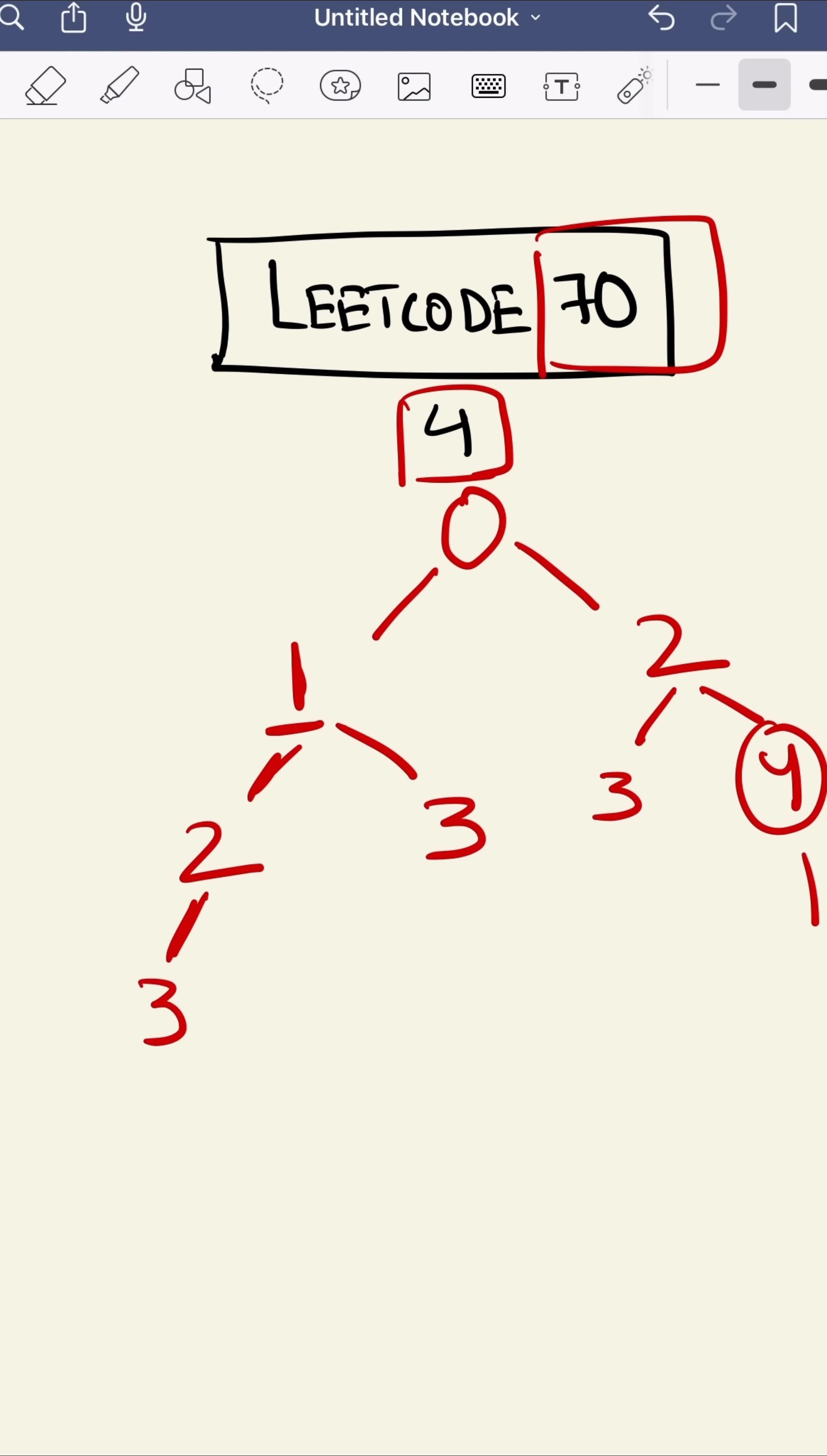From here, we can go one step to three or two steps to four. We got four here. From here as well, we can go one step to four. It's done. Here also, one step to four.